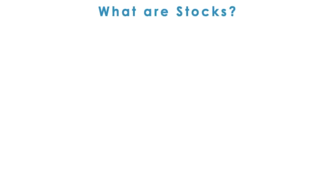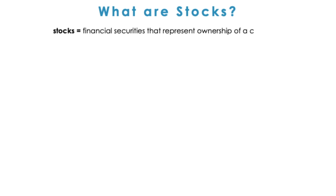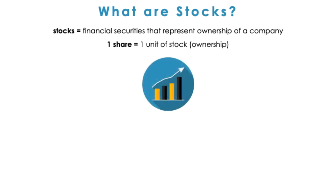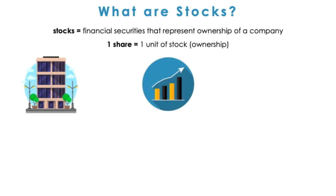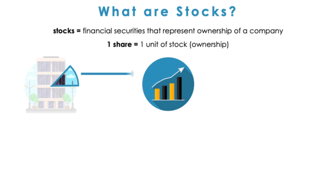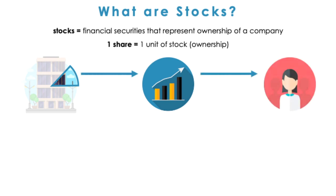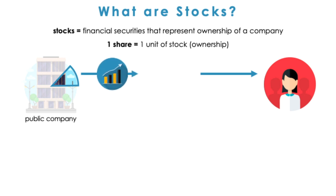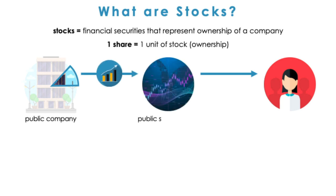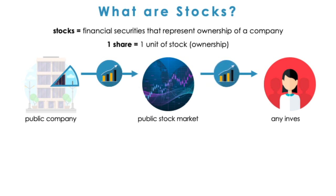Let's begin by talking about what stocks are in the first place. Essentially, stocks are a type of security that represent ownership of a company. Shares are units of stock or ownership, so when a company issues or sells shares, an investor can own a piece of the company by buying shares in the company. If companies are publicly owned, then they can issue or sell shares on the stock market, and any investor participating in the stock market can own a piece of the company at the going market price.